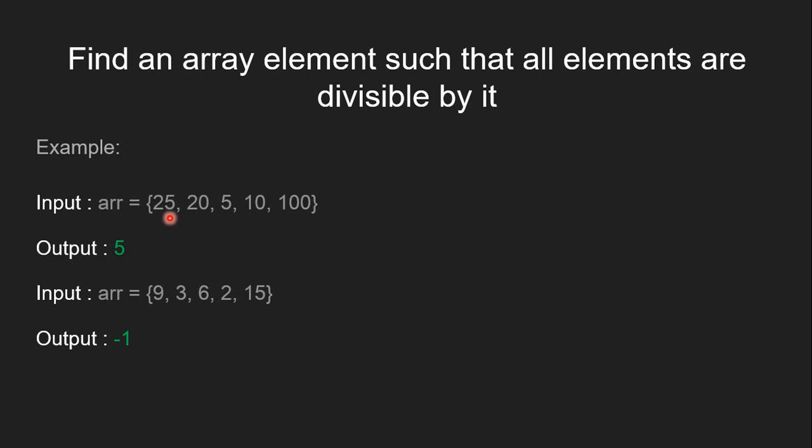The output should be 5, as 5 is the only array element which divides all the numbers. In the second input, arr = {9, 3, 6, 2, 15}, the output should be -1, as there is no element which can divide all the numbers.